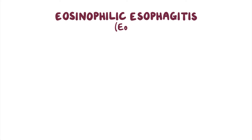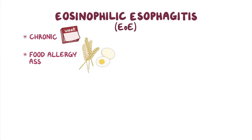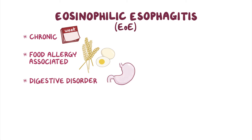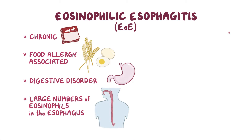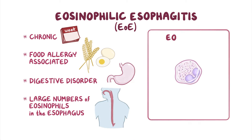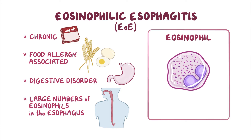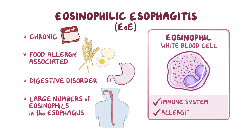Eosinophilic esophagitis, or EOE, is a chronic food allergy-associated digestive disorder in which people have large numbers of eosinophils in the esophagus. Eosinophils are a type of white blood cell that play many roles within the immune system and are involved in allergic reactions.